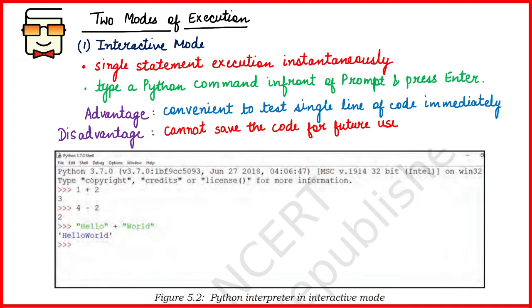In interactive mode, you type one statement at a time. You type one instruction, press Enter, and immediately get the result. For example, as shown in the image, you type '1 + 2' at the prompt, press Enter, and the result — 3 — appears immediately on the next line in the Python shell.